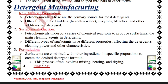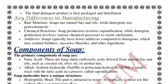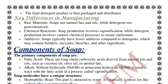Surfactants — the main cleaning agents of detergents — are produced by subjecting petrochemicals to various chemical reactions. Different types of surfactants affect cleaning power and other characteristics. Formulation involves combining surfactants with other ingredients through mixing, heating, and drying. The finishing stage involves packing and distribution. Key differences between soaps and detergents include raw material source, chemical reaction type, and additives.